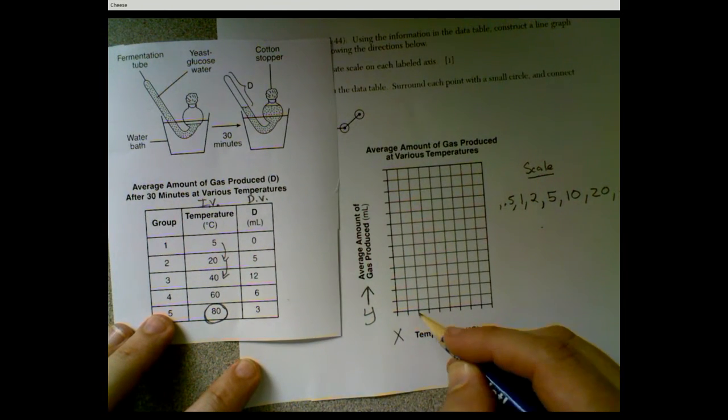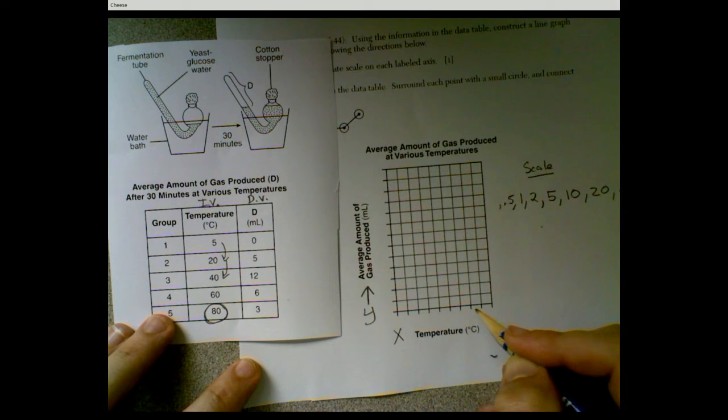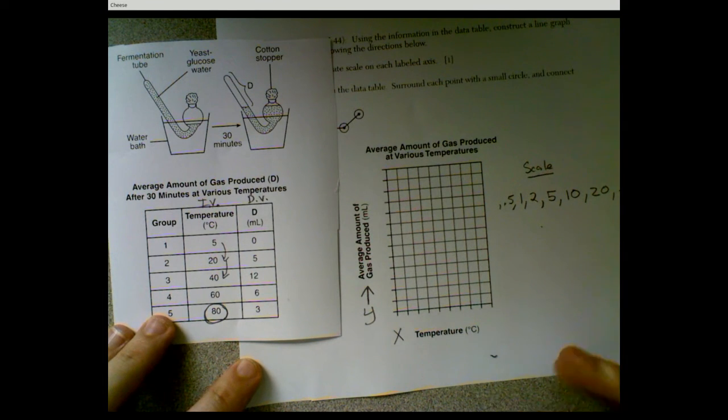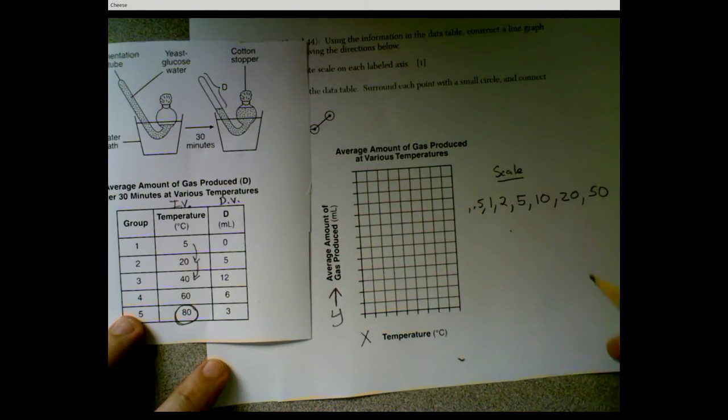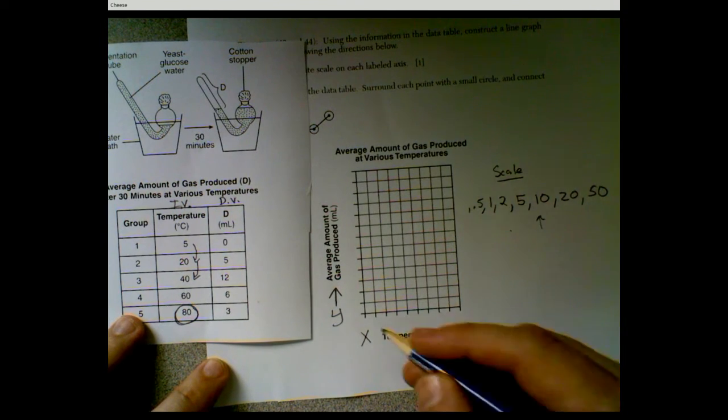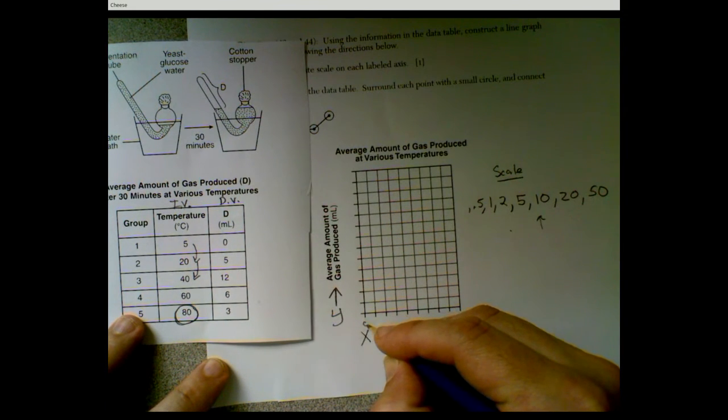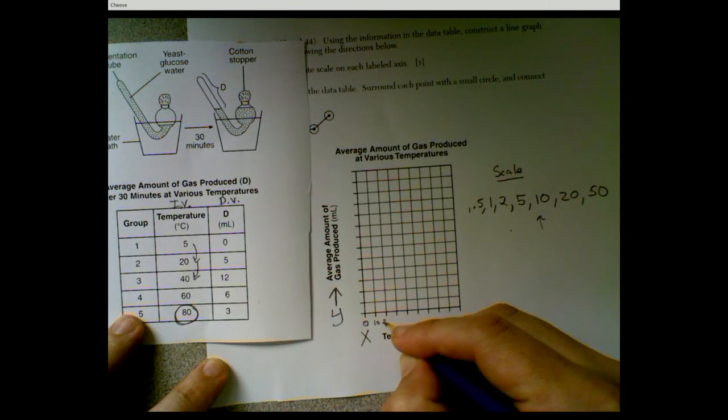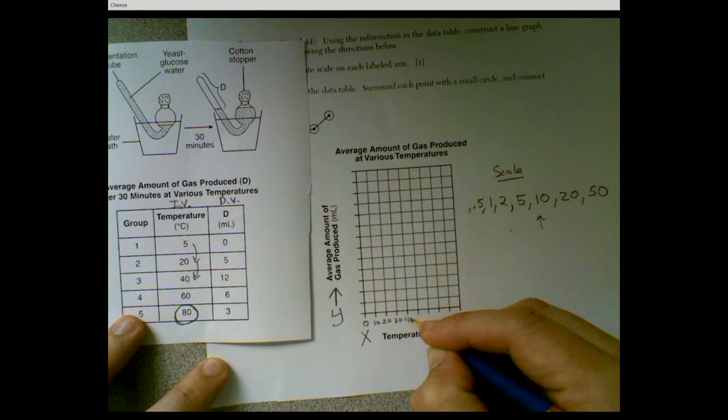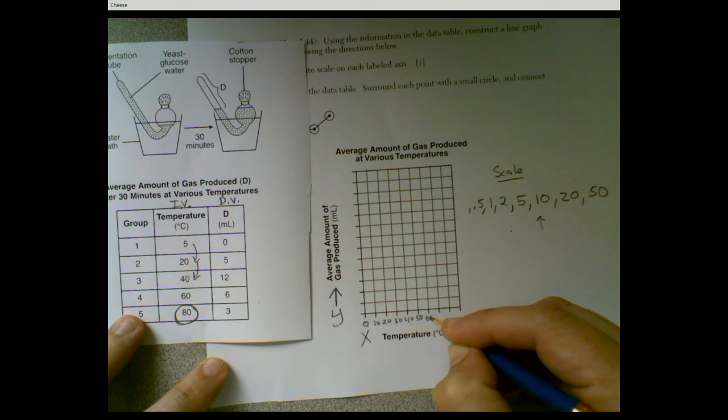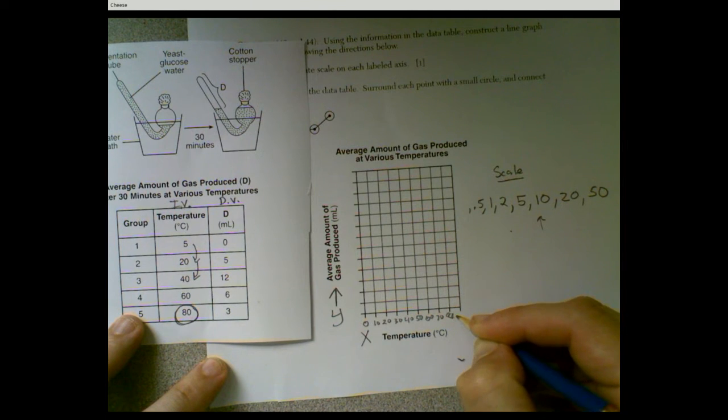So which scale number should we choose for this data? Well, we have 1, 2, 3, 4, 5, 6, 7, 8, 9 squares. A good choice would probably, looking at these, would probably be 10. Let's do 10. That will work out. 0, 10, 20, 30, 40, 50, 70, 80, 90.